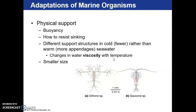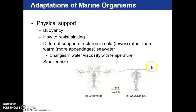Different structures exist in cold water versus warm water to allow for buoyancy, because water changes in its viscosity — its thickness — with temperature. Looking at two creatures in the same genus but different species: the cold water species have fewer appendages because cold water is thicker and provides more resistance. Warm water is less viscous, so the warm water species have more appendages to help spread out and stay buoyant.